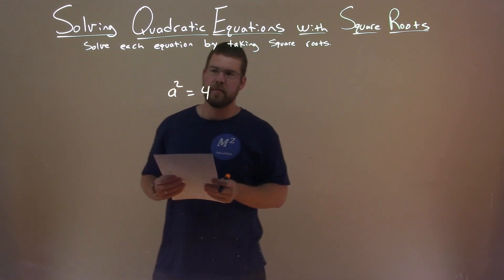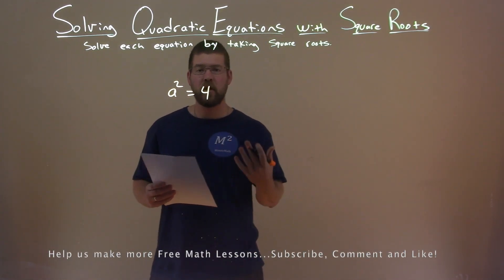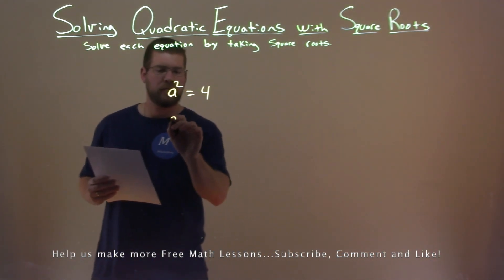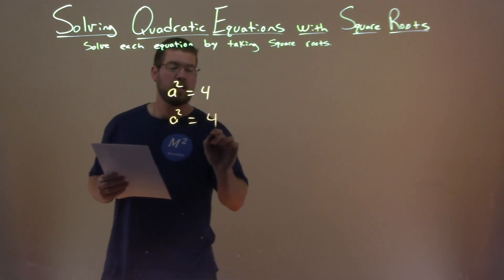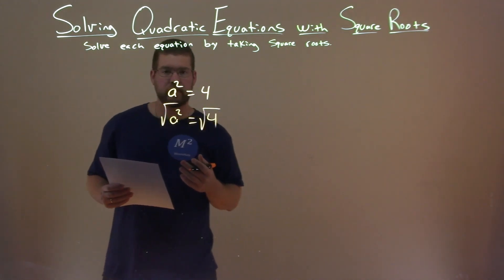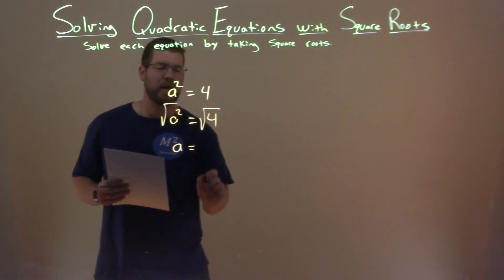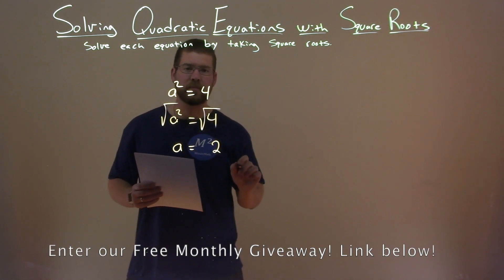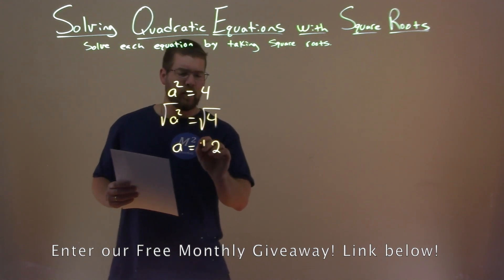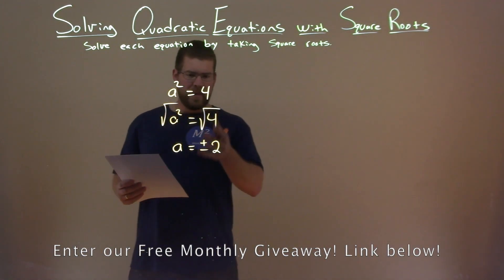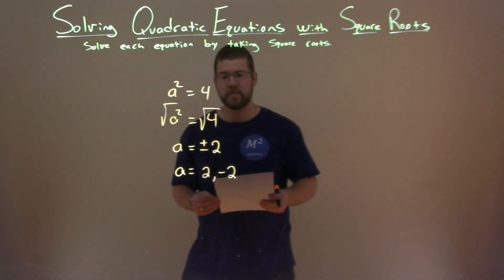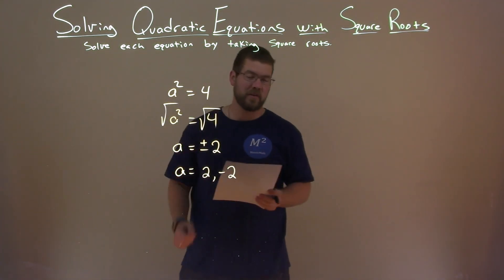We're given this problem here: a squared equals 4, and we want to solve this by taking the square root. Our variable a is already by itself, just squared. To eliminate that squared, I need to take the square root of both sides. That eliminates the squared, so a is now by itself, and the square root of 4 is 2. But we have to write that as plus or minus, so a equals a positive 2 and a negative 2. Those are our final answer.